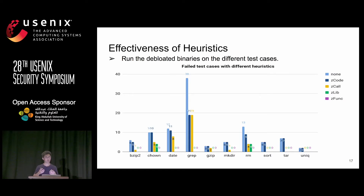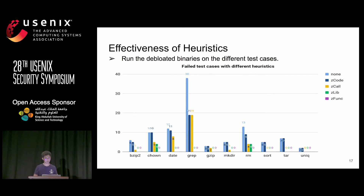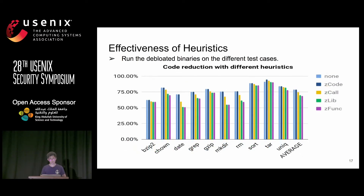To see how effective our heuristics are, we run the debloated binaries on different test cases that share the same functionality. Without any heuristics, the debloated binaries fail on most test cases. However, after applying progressively more aggressive heuristics, the resulting binaries can run all different test cases without any crashes. Even with the most aggressive heuristic — same functionality — it does not sacrifice too much code reduction benefit.